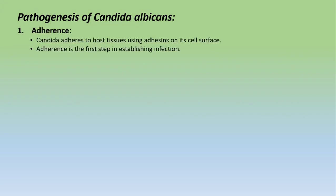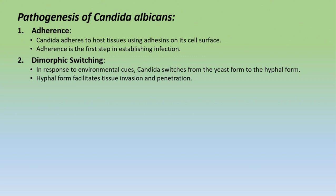The pathogenesis steps of Candida albicans: First is adherence — although Candida is already present in the body, it needs to adhere to host tissues using adhesins on the cell surface. After adherence, Candida switches from its yeast form to its hyphal form in response to environmental cues. This is important to distinguish from other dimorphic fungi — in those fungi, the hyphal form was in the environment and yeast form was in the body, but in Candida it is already in the body as yeast and converts to hyphal form because hyphal form facilitates tissue invasion and penetration.